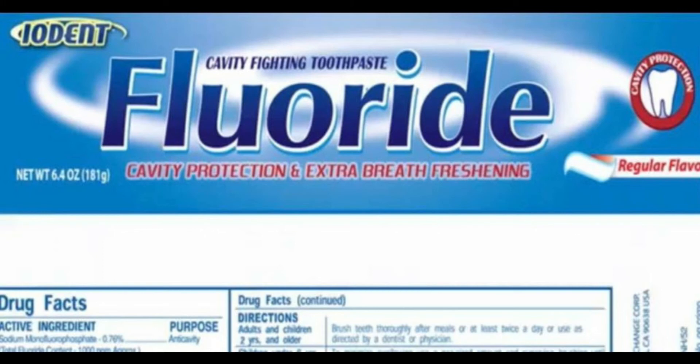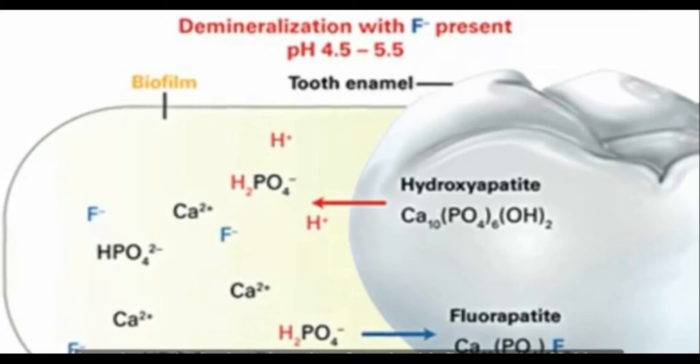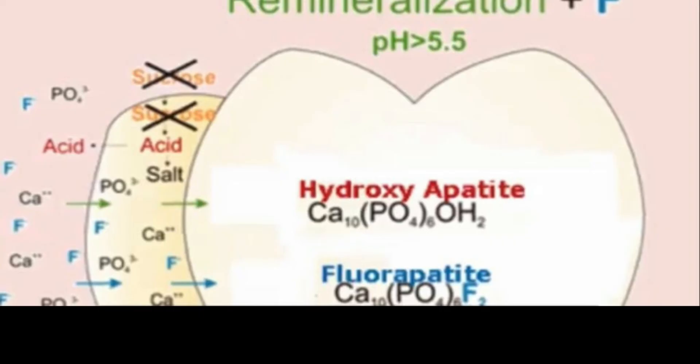A very important point is that the most important ingredient of toothpaste is fluoride. It replaces the hydroxyapatite of the tooth with fluorapatite, making an equilibrium between mineralization and demineralization processes, thus keeping the enamel layer safe against acid action. Fluorapatite is not only much stronger but also resistant to caries.